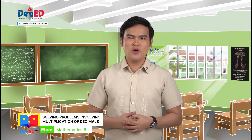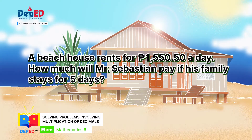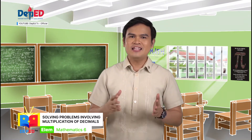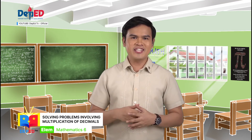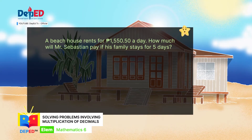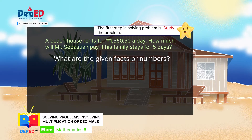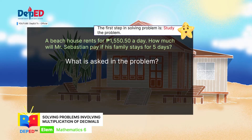Mateo, can you read our first problem? A beach house rents for 1,550 pesos and 50 cents a day. How much will Mr. Sebastian pay if his family stays for five days? Thank you, Mateo. Let's help Mr. Sebastian solve his problem. Mateo and kids, get ready! By following the STAR, we can solve this problem. The first step is to study the problem. What are the given facts or numbers? 1,550 pesos and 50 cents a day, and five days. What is asked in the problem? The amount that Mr. Sebastian will pay.